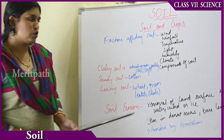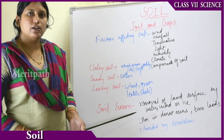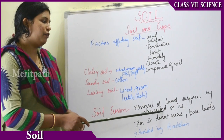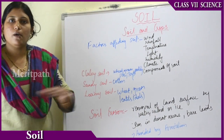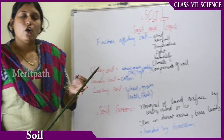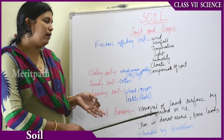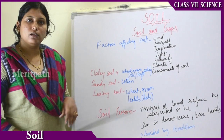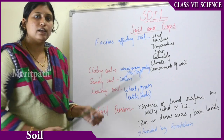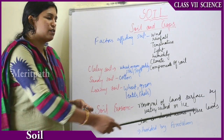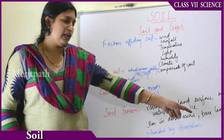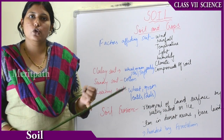The last topic is soil erosion. Soil erosion is the removal of the land surface by water, wind, or ice — the top surfaces of the soil are washed off by excessive rainfall, drought, or wind. Soil erosion is seen mostly in desert areas or bare lands where there is no vegetation — no rainfall and no planting of crops.